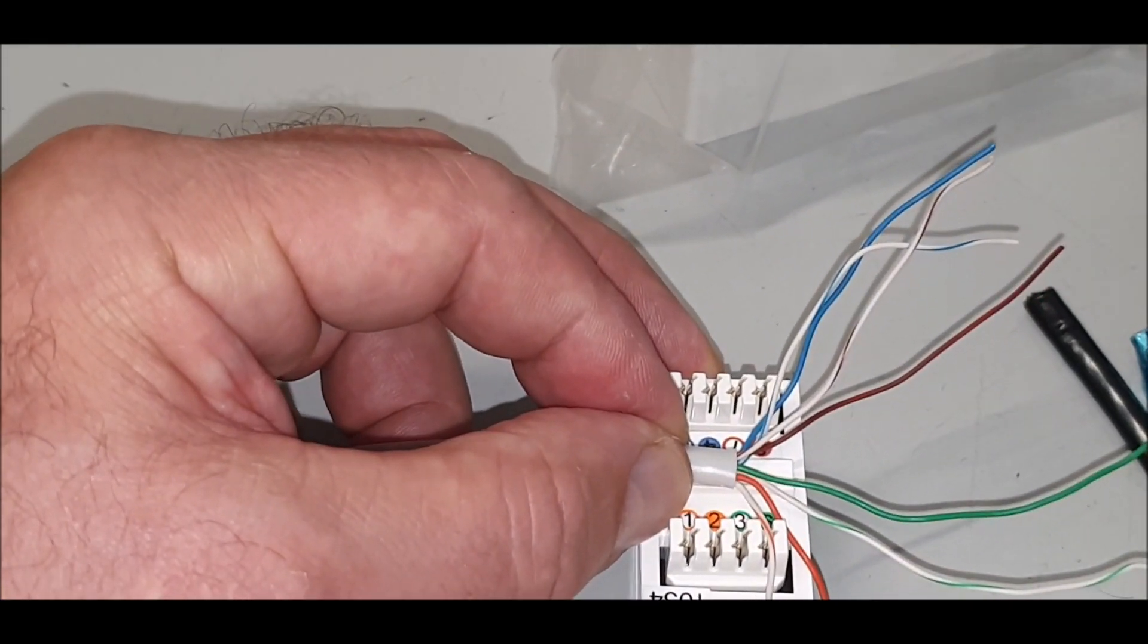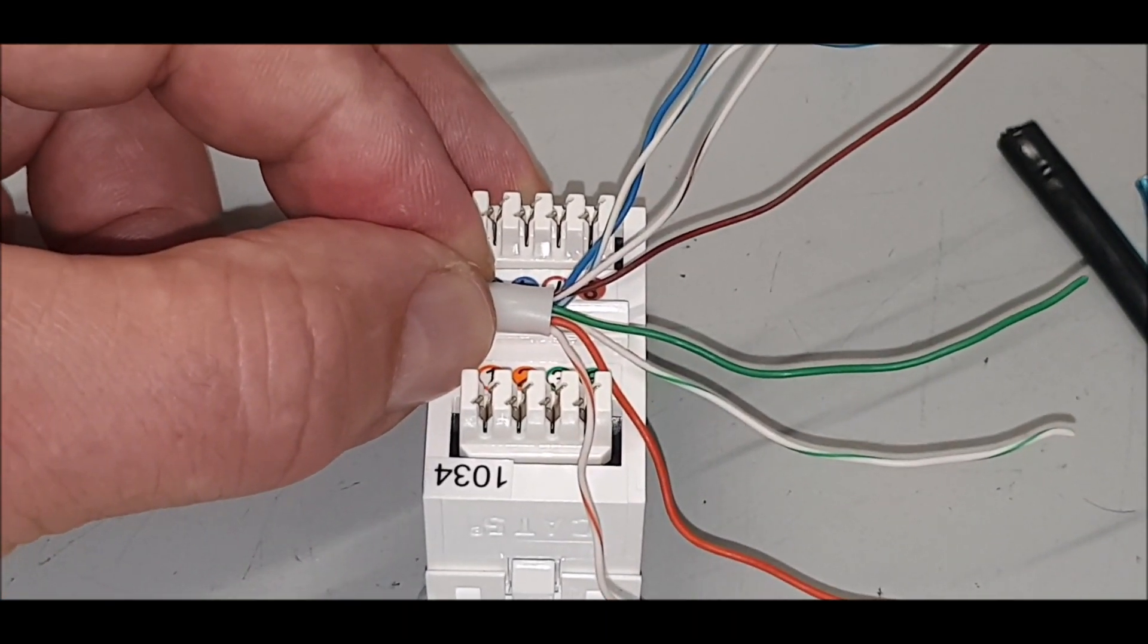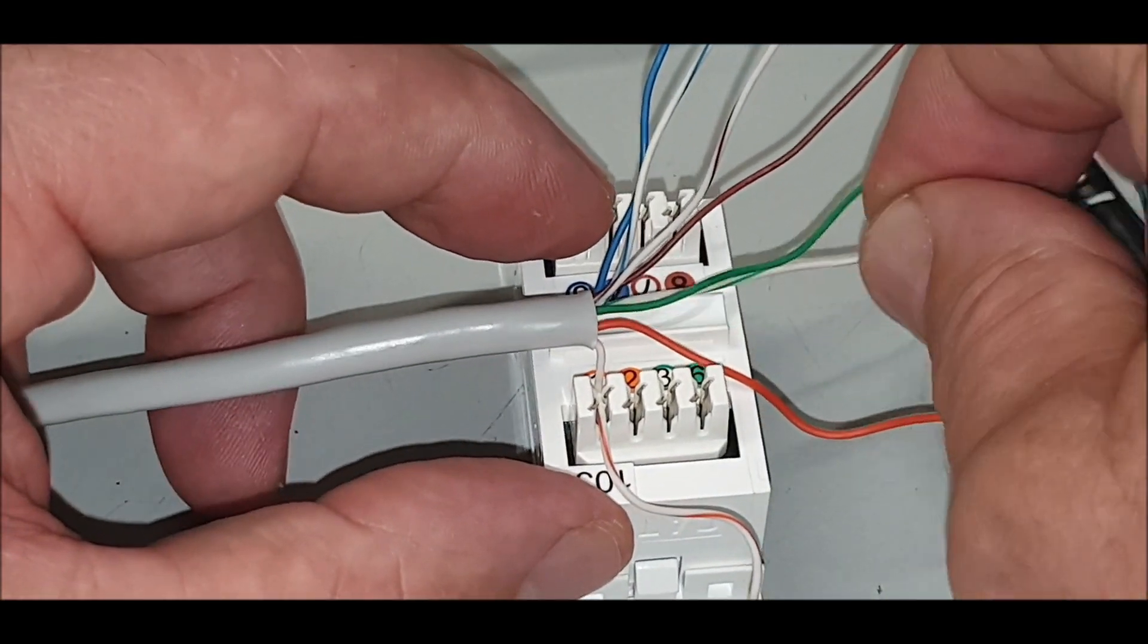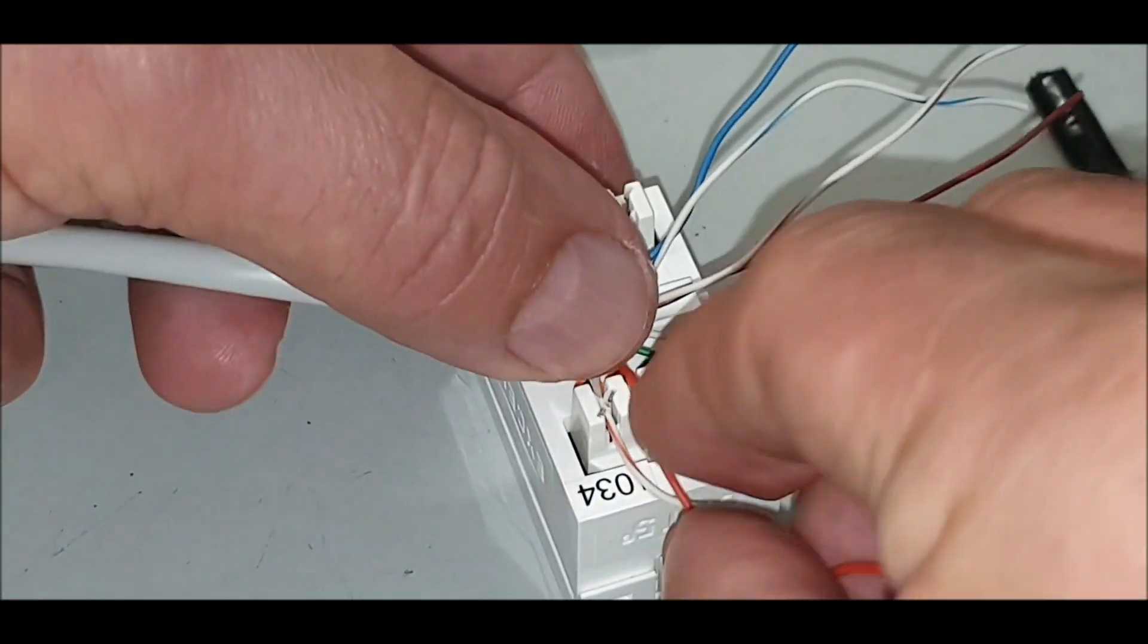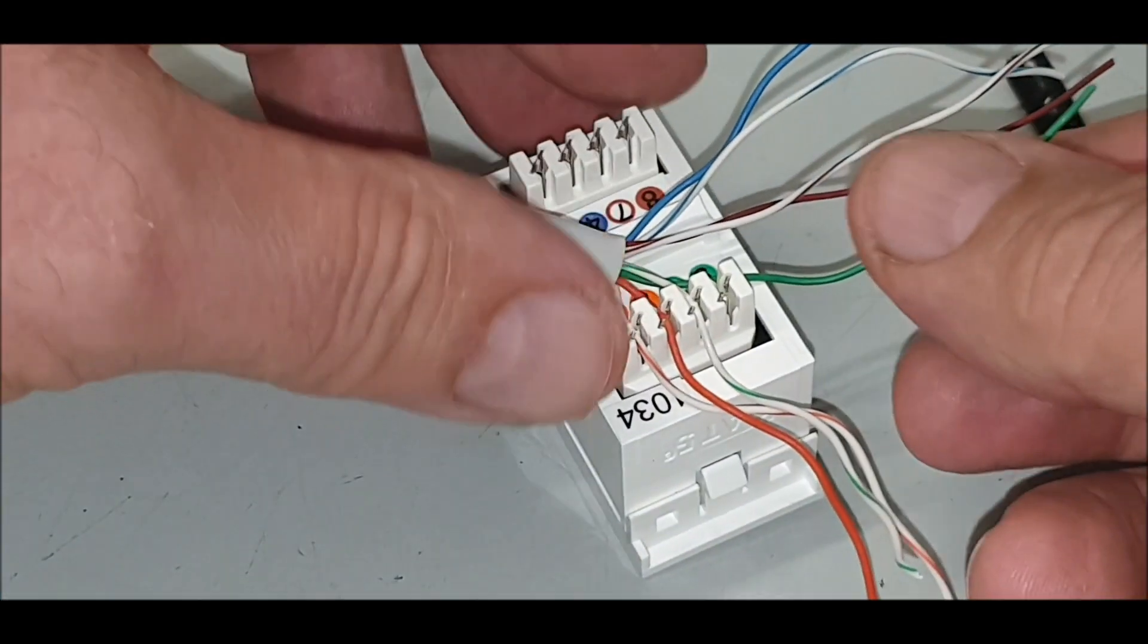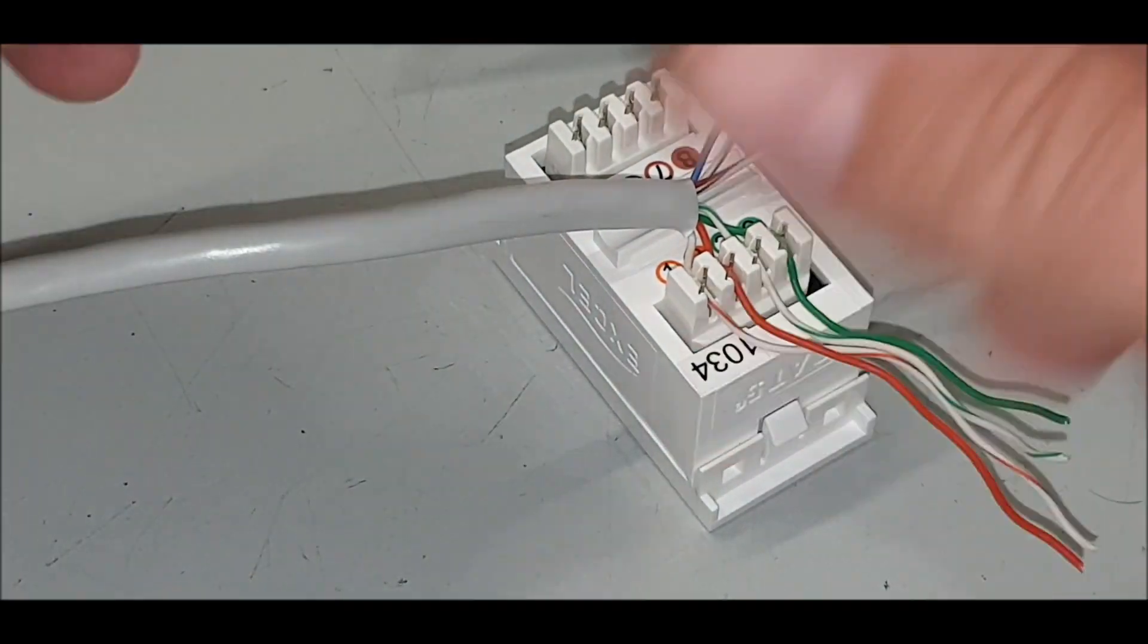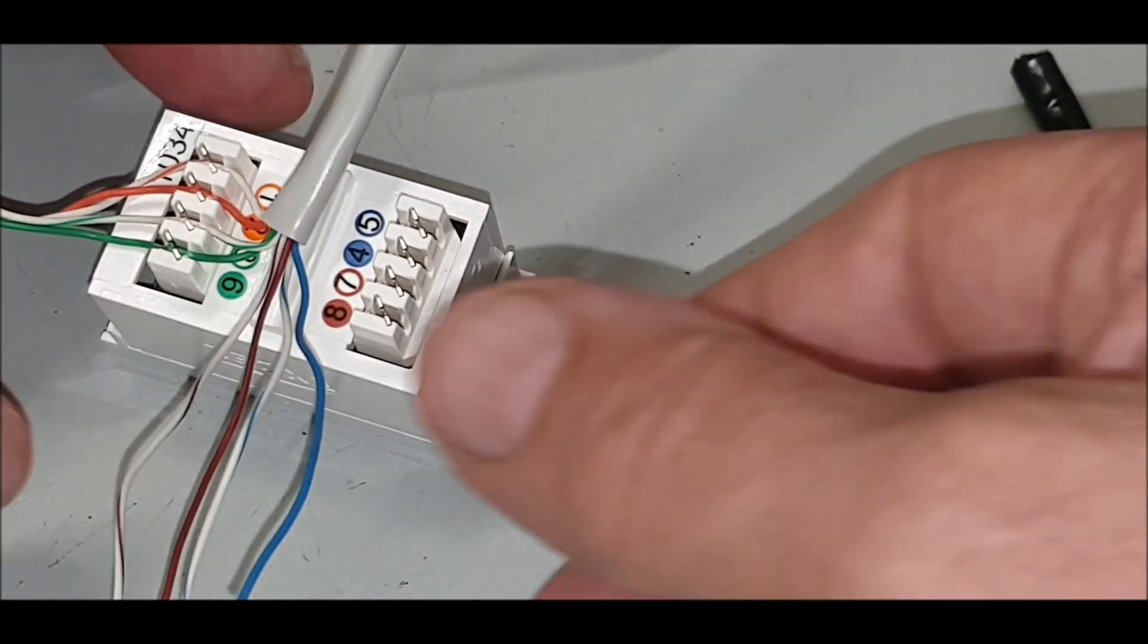We're going to use a punch down tool. You bring them back like so and just put them in place for now. Orange and white orange, put it in place. Then green and white. What you're trying to do is get the distance right. You don't want any massive wire sticking out and then curl it all up. You want to make them as neat as you can possibly do.